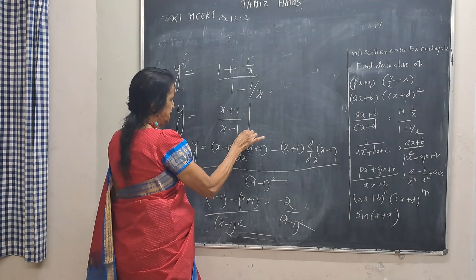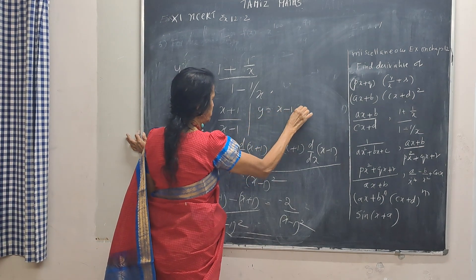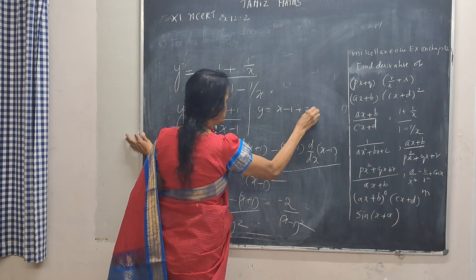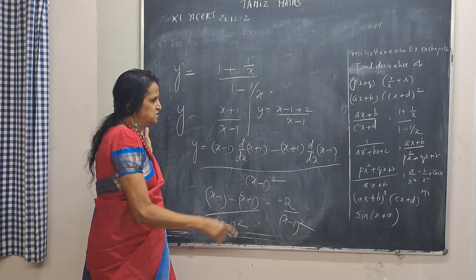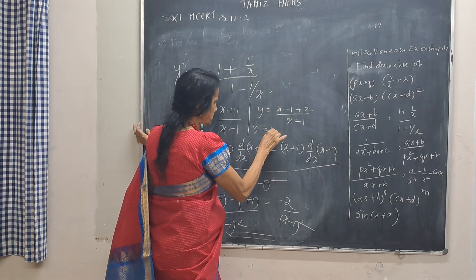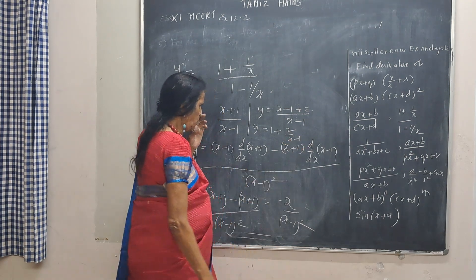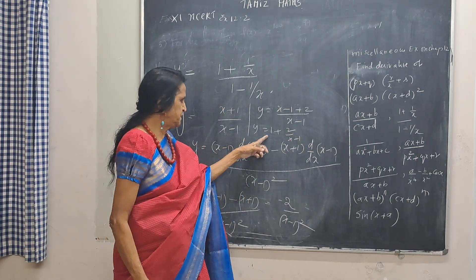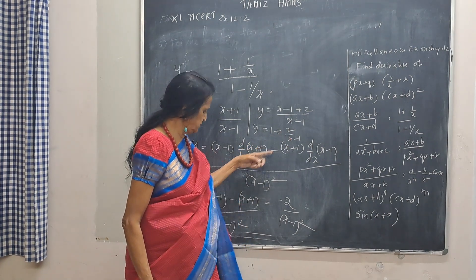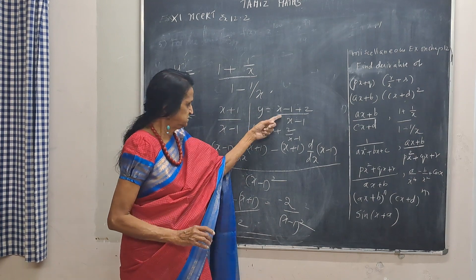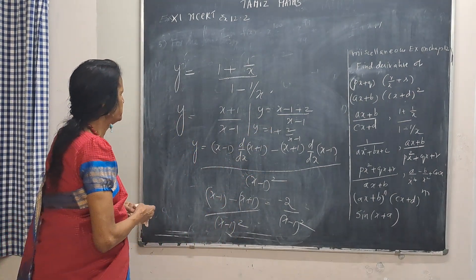Alternatively, you can write y by simplifying: dividing gives 1 plus 2/(x - 1). So when you find dy/dx, the derivative of 1 becomes 0, and you find the derivative of 2/(x - 1), which gives the same answer. This approach also works.